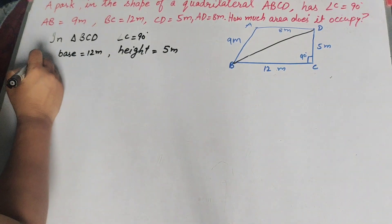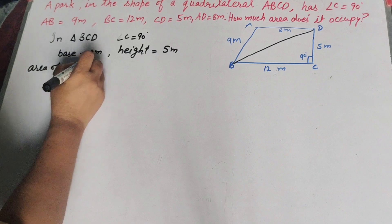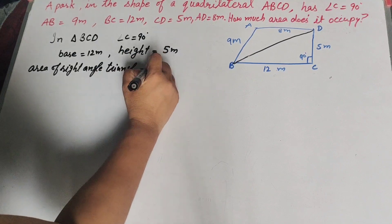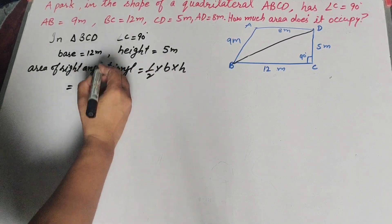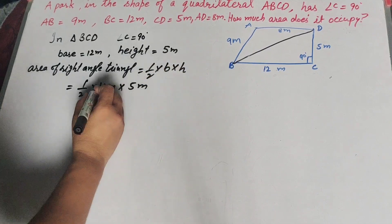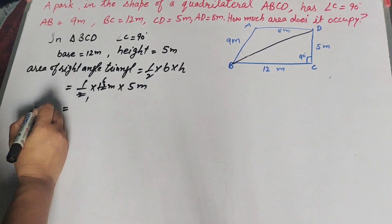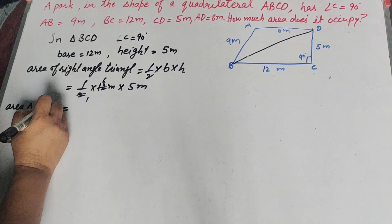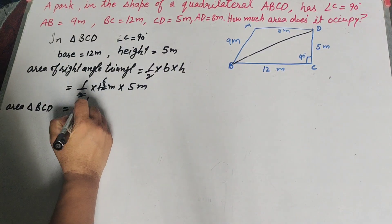We find the area of the right angle triangle. The formula is: area equals half times base times height. So area equals half times 12 times 5. We cancel 12 and 2 to get 6, so area of triangle BCD equals 6 multiplied by 5, which is 30 square meters.